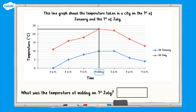Let's check your answer. The point where the line reaches the y-axis isn't labelled, but we can work out that each of the intervals has a value of 1 degree. So the answer is 23 degrees.